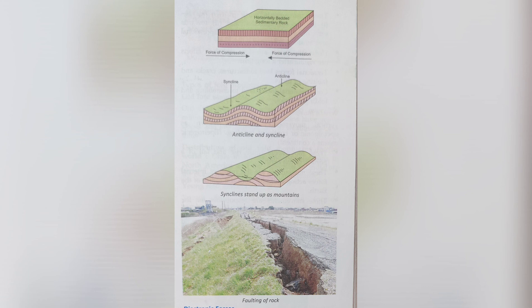Let's understand through an example. Consider a horizontal body of sedimentary rocks — a simple plane surface. When forces of compression act from the left side and from the right side, what happens to that horizontal bedded sedimentary rock? It converts into a curved shape. The downward curve is called the syncline and the upward one is called the anticline. The anticline stands up as a mountain.